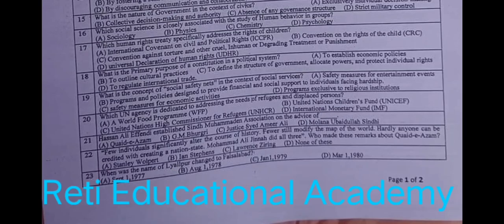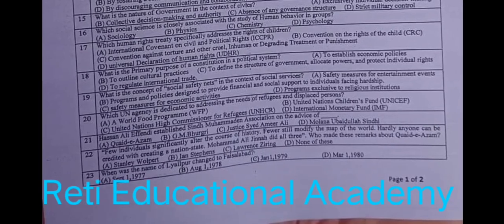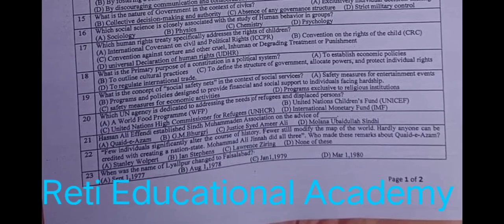Question number twenty-three: When was the name of Lyallpur changed to Faisalabad? A. September 1st, 1977, B. August 1, 1978, C. January 1, 1979, D. March 1, 1980. The correct answer is A, 1st September 1977. Question number twenty-four: Which air company was the first to operate in Pakistan? A. Pakistan Airways, B. Orient Airways, C. Crescent Airways, D. Pakistan International Airlines. The correct answer is B, Orient Airways.